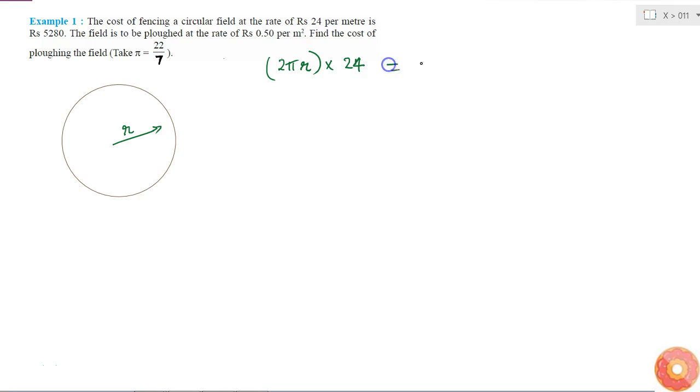So it is 2πr meters multiplied by rupees 24 per meter, which is equal to 5280. So what does that mean? This means that the circumference is equal to 2πr, which is the same as 5280 divided by 24.